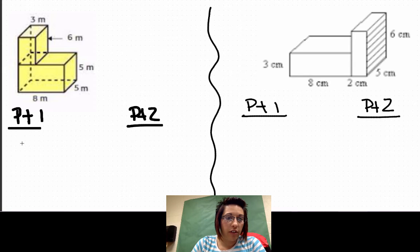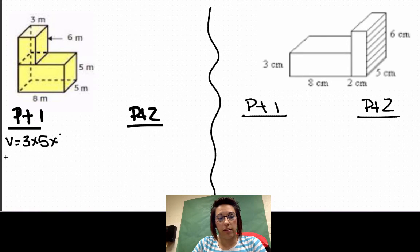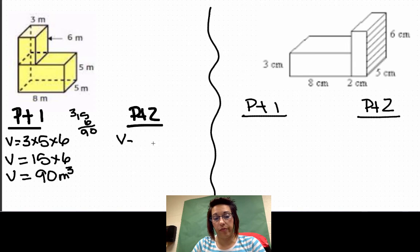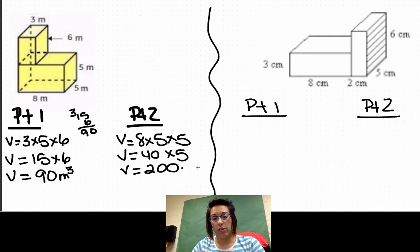So let's look at this first solid. Six high, three, that means it's going to be five across here. So part one, volume equals 3 times 5 times 6. Volume equals 15 times 6. Volume equals, 6 times 5 is 30, 6 times 1 is 6 plus 3 is 9, so 90 meters cubed. Part two, that is the bottom part, 8 times 5 times 5, so volume equals 40 times 5. Volume equals 200 meters cubed. So volume equals 290 meters cubed.